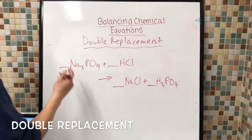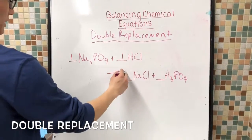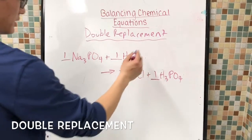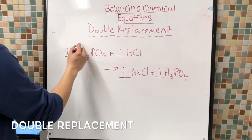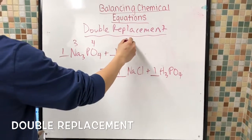In this equation here, if we set all these blank spaces to one, then we can count up the amount of atoms in the compound already. So Na has three, PO has four, H has one, and Cl has one.